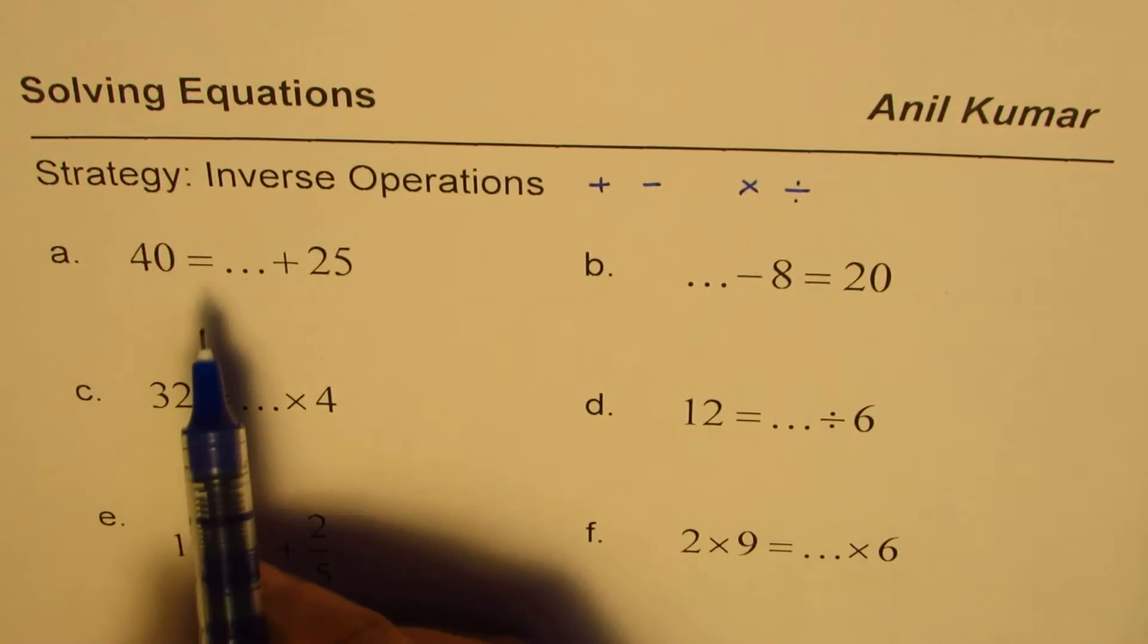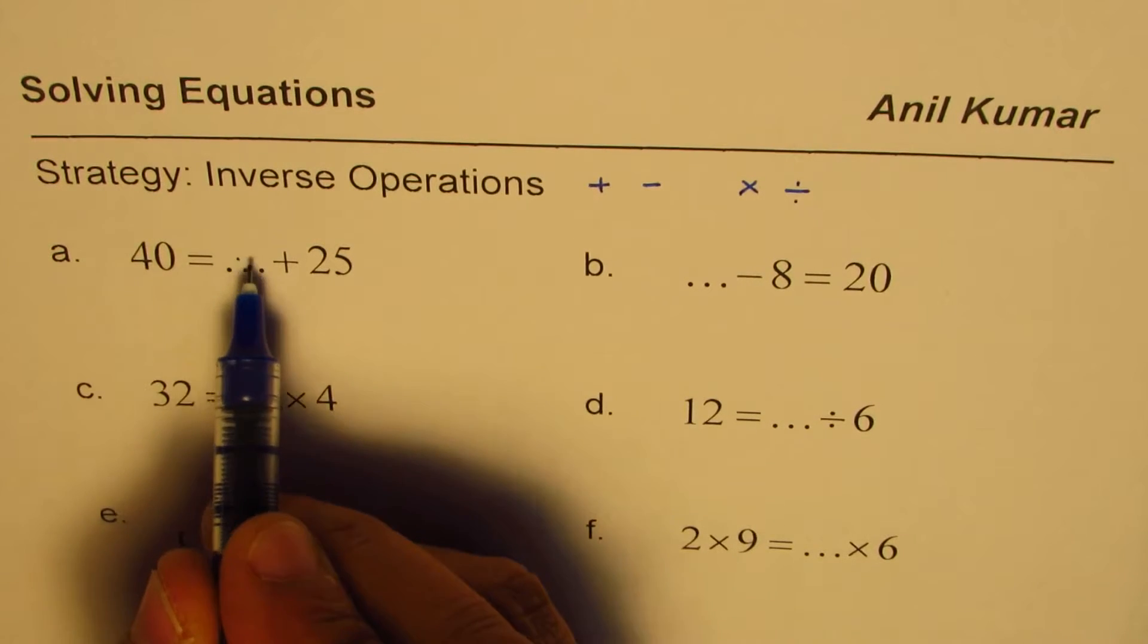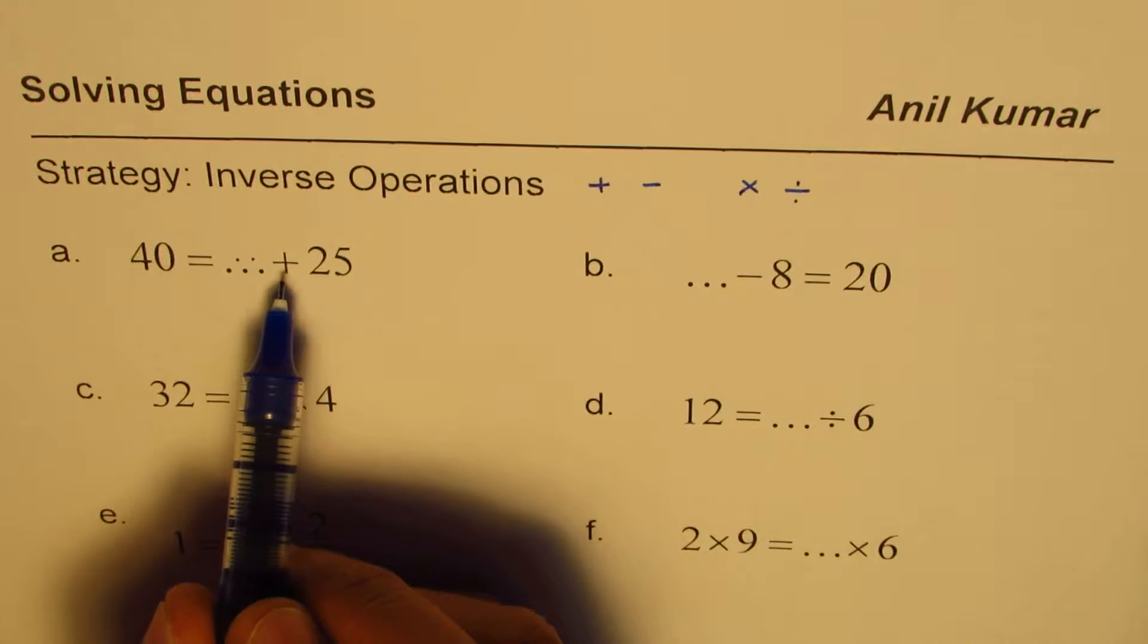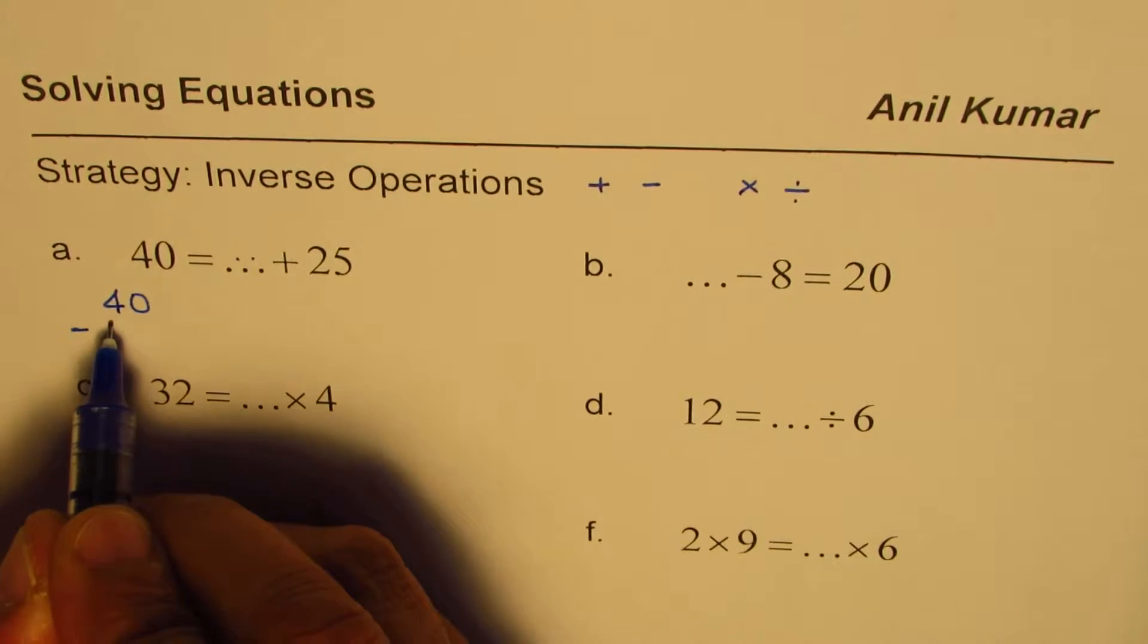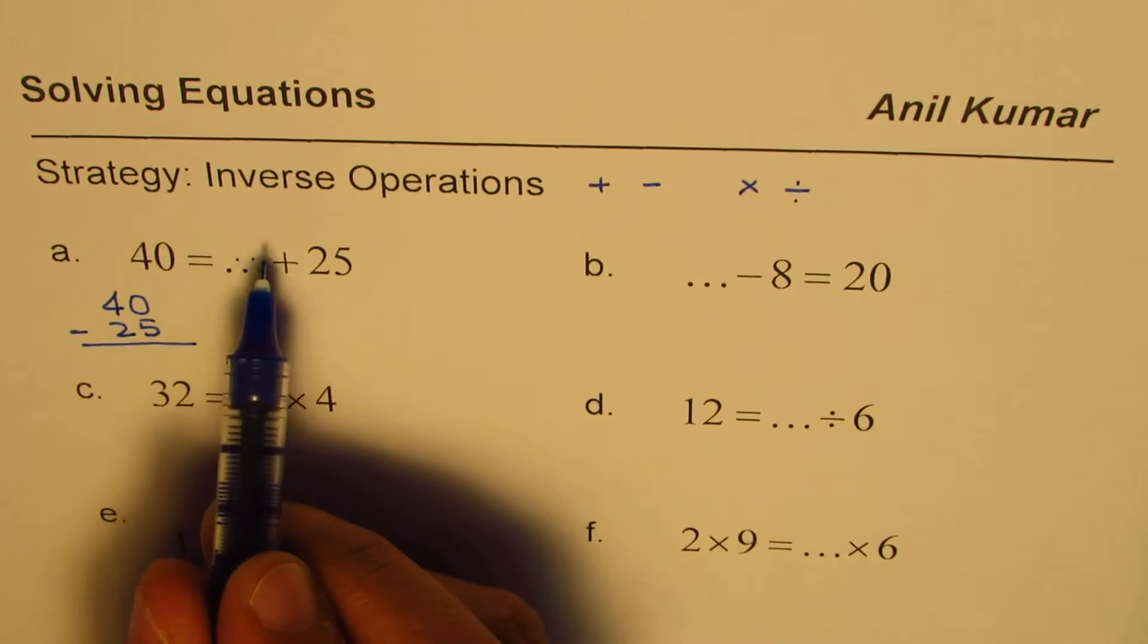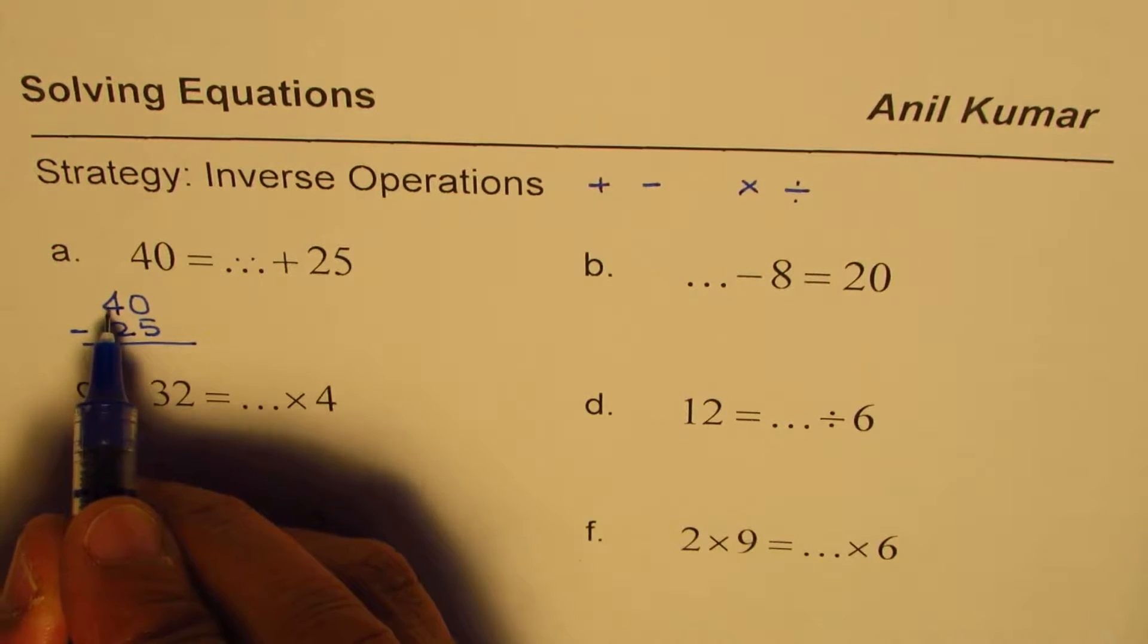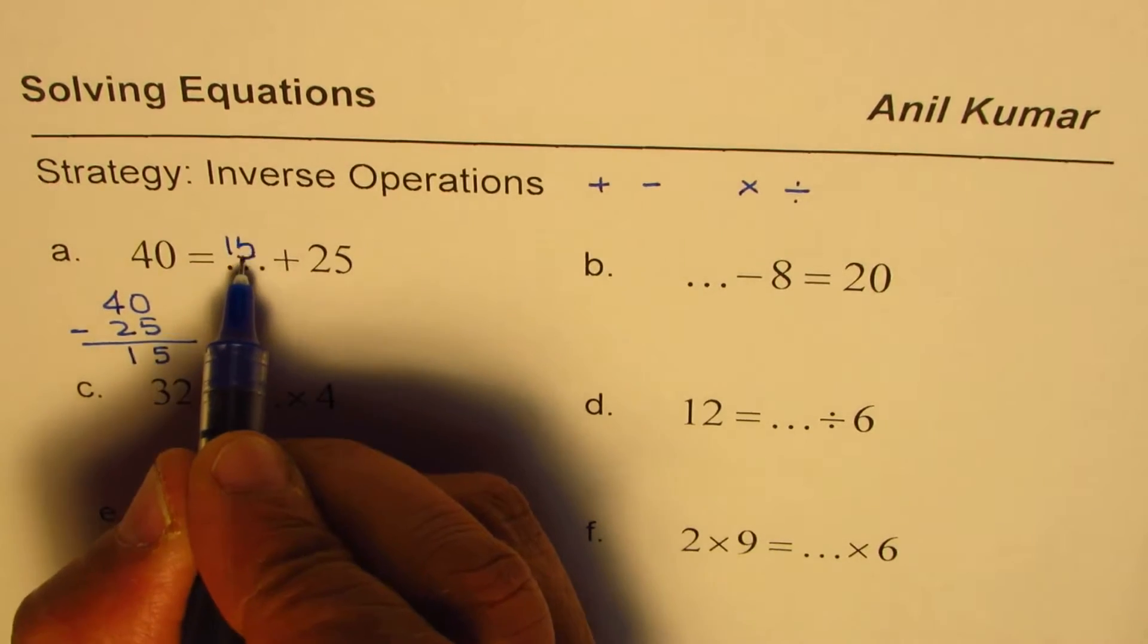Let's begin with the very first one which is 40 equals to something plus 25. Now what is that thing we could find by doing inverse of plus 25, that is we will do 40 take away 25 to get the answer. So when you take away 25 from 40 you get this number. So this number is borrow 1 from 4 you get 10 and 3 take away 2 is 1.